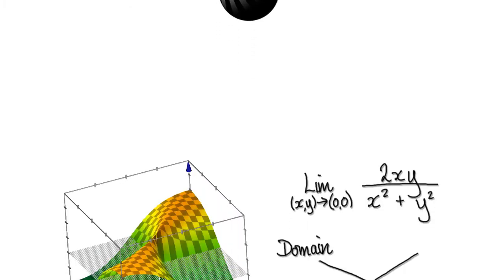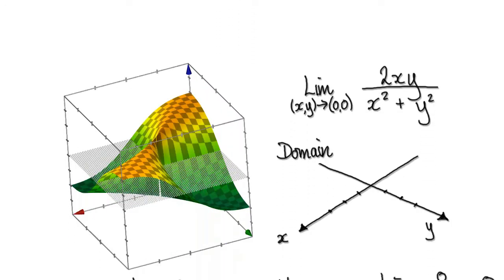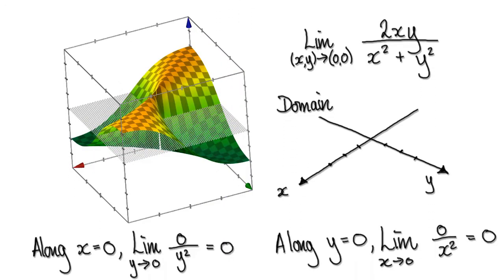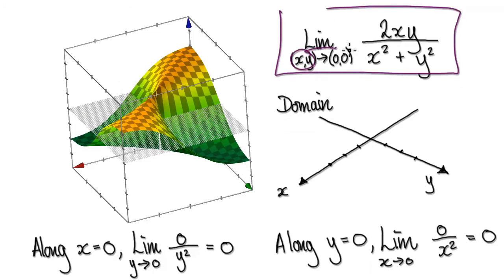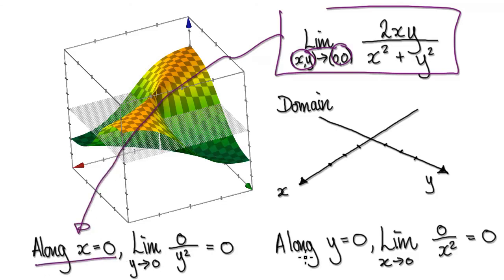In this video, I'm going to try and illustrate that when evaluating a limit as you approach the origin, sometimes it's not sufficient enough to just consider along x equals 0 and y equals 0. So sometimes it's not sufficient enough just to consider approaching the origin along the two axes.